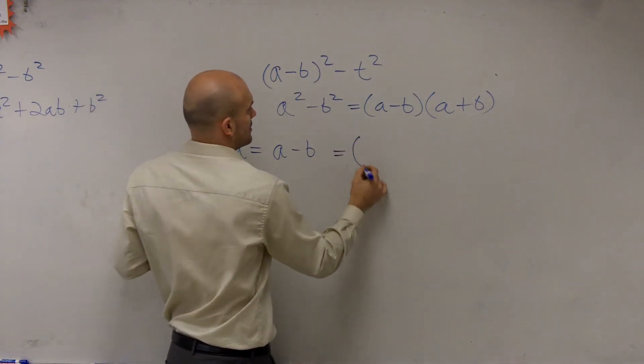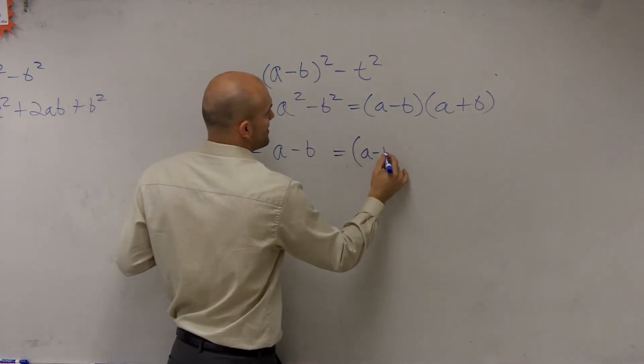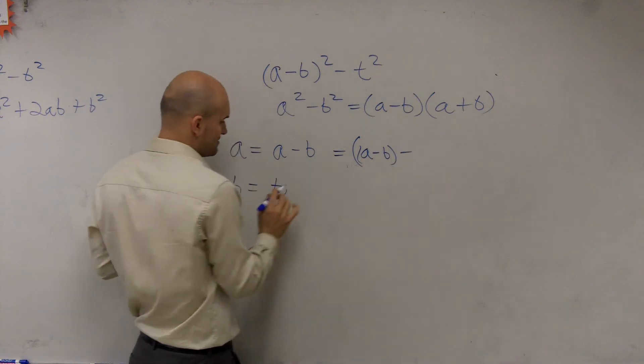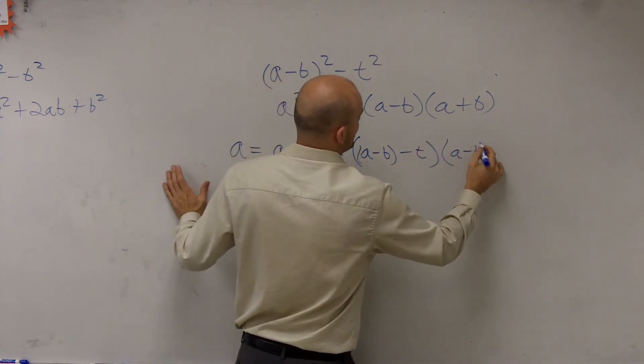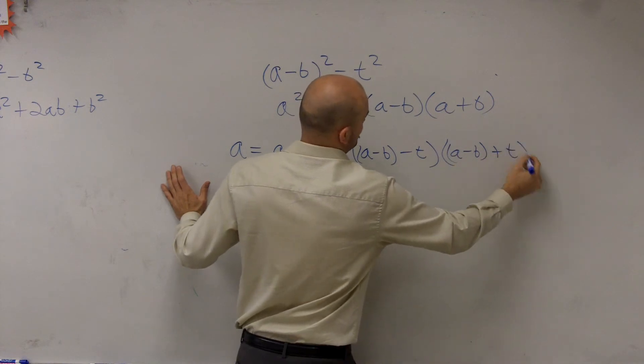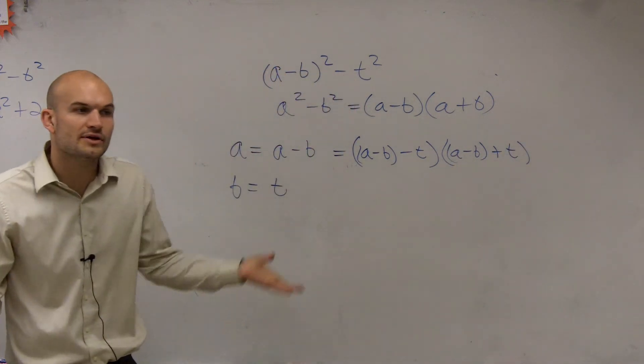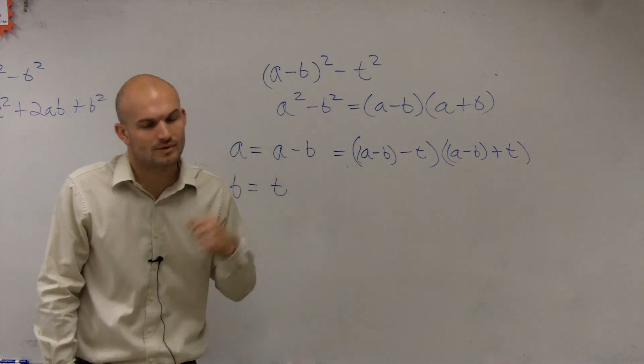So now just plug it in. So a is a minus b minus my b, which in this case is t, times a minus b plus t. And there you go. That's how you solve the difference of squares. Difference of two squares.